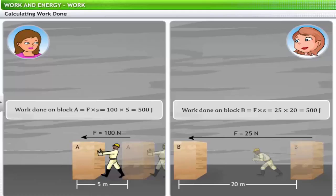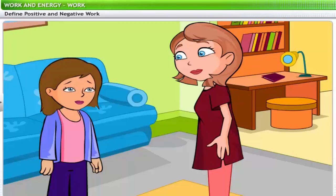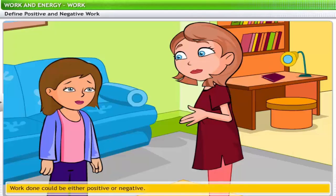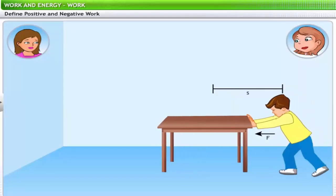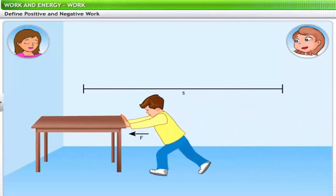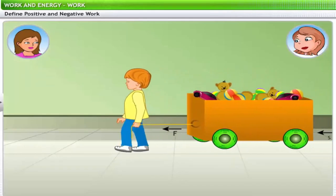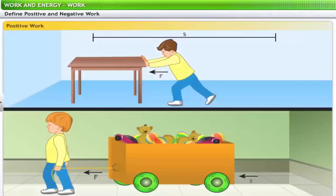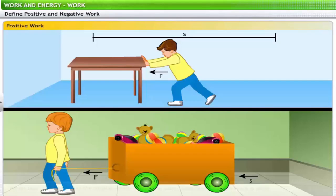Correct, very good. Now we have learned to examine situations to determine whether or not work is done. However, the interesting thing about work is that it can be positive as well as negative. Let me explain through examples. Consider two situations where force and displacement are in the same direction: a boy shifts a table by pushing it over a smooth floor, and a small child pulls a toy cart with rubber wheels over a smooth floor. In both cases, some work is done and the force and displacement are in the same direction — this is called positive work.